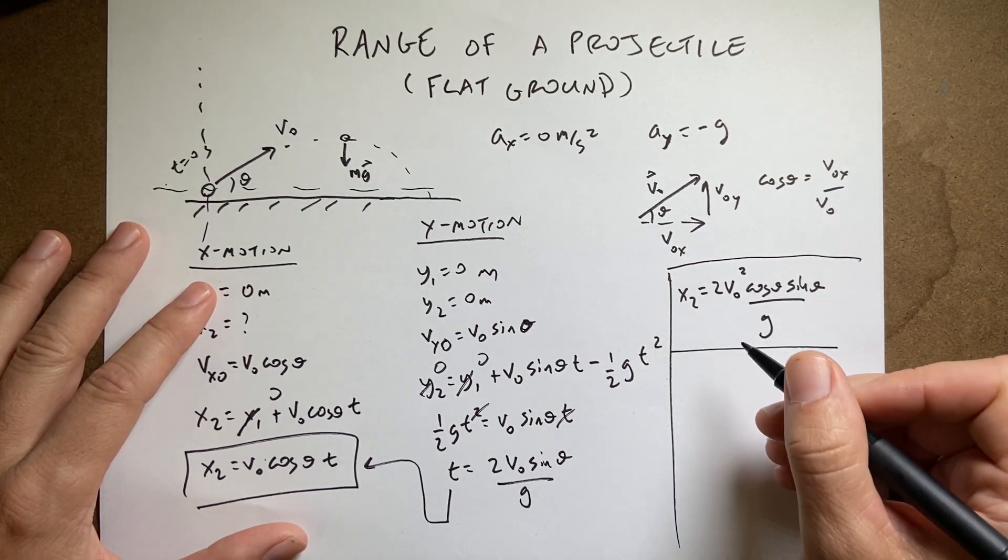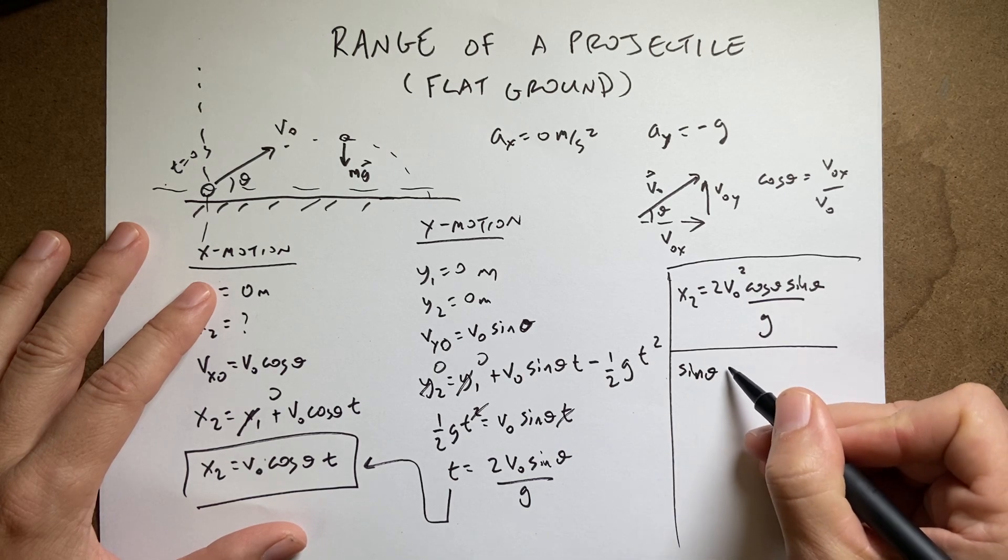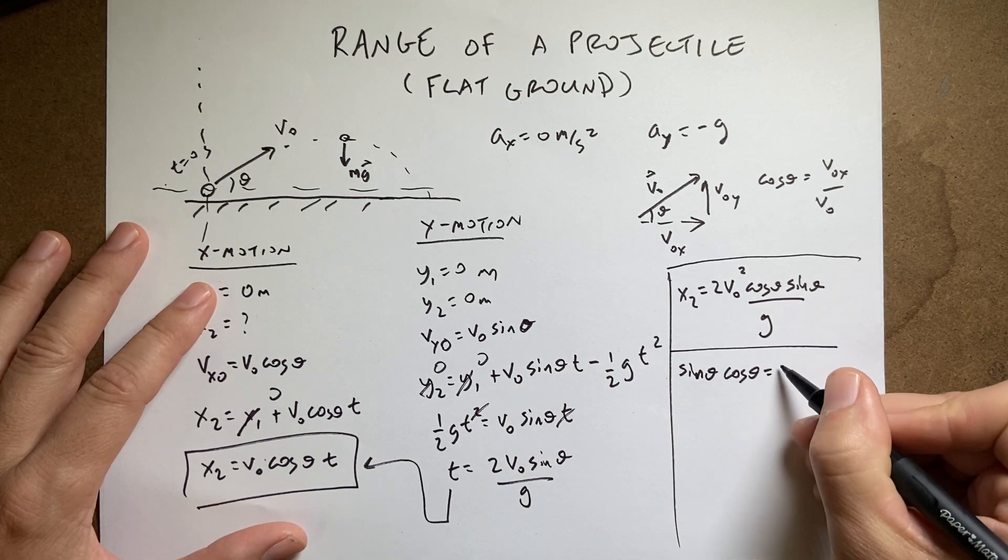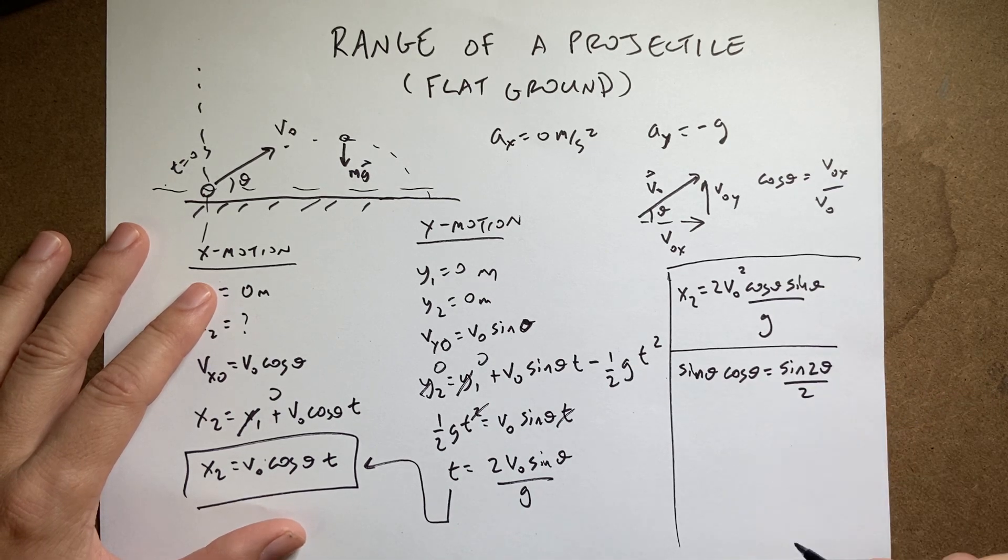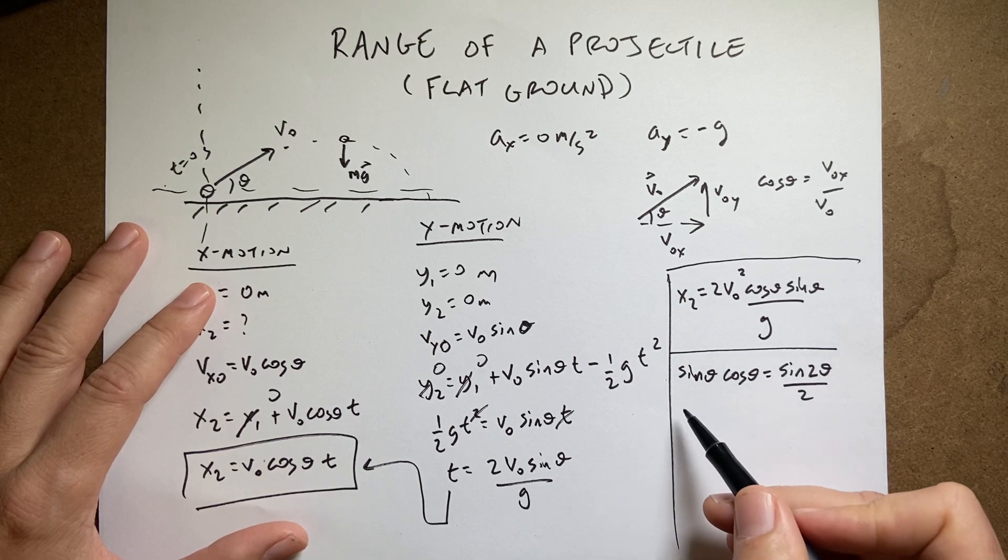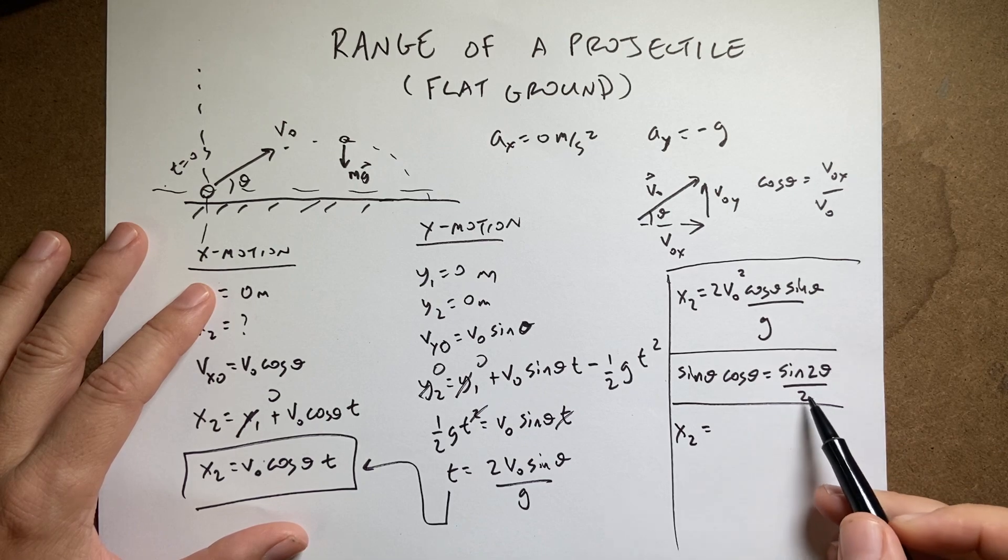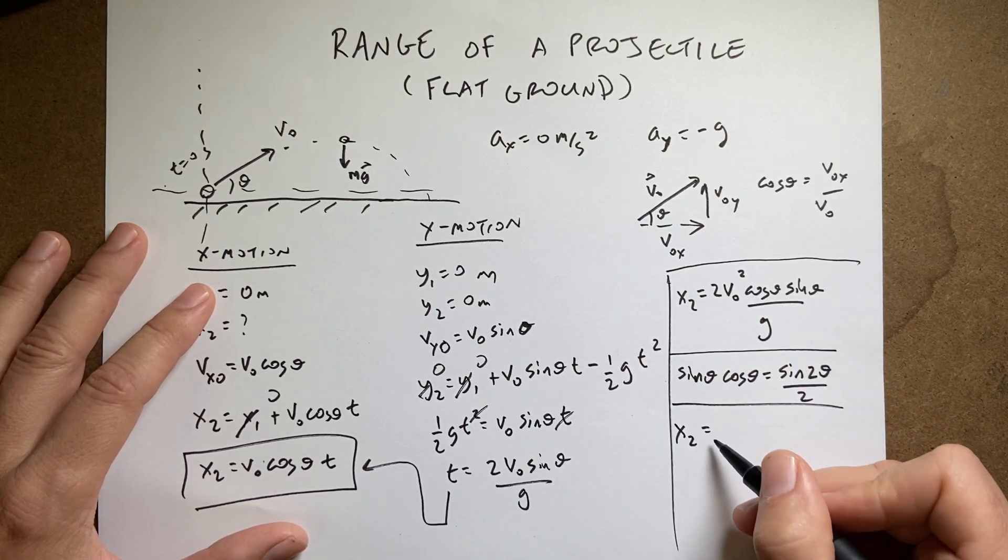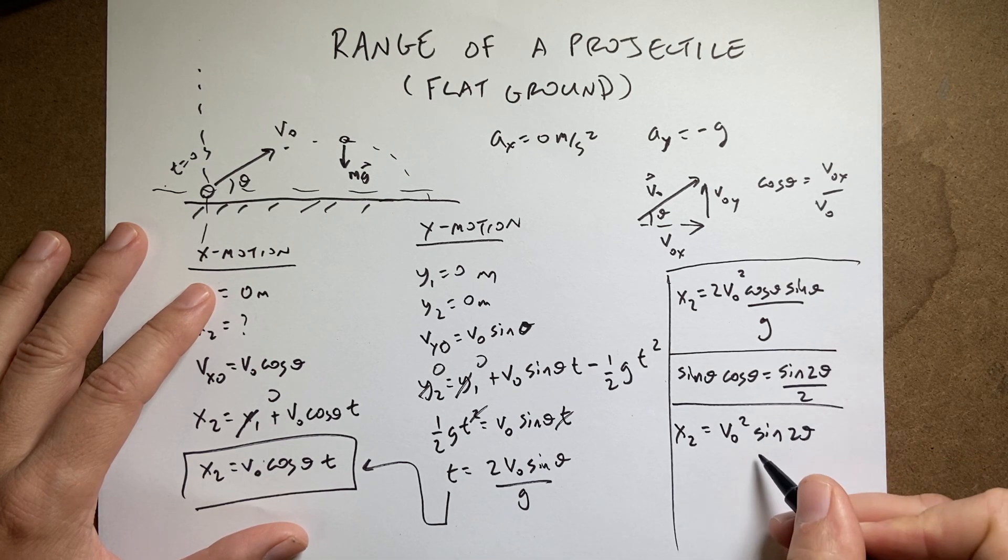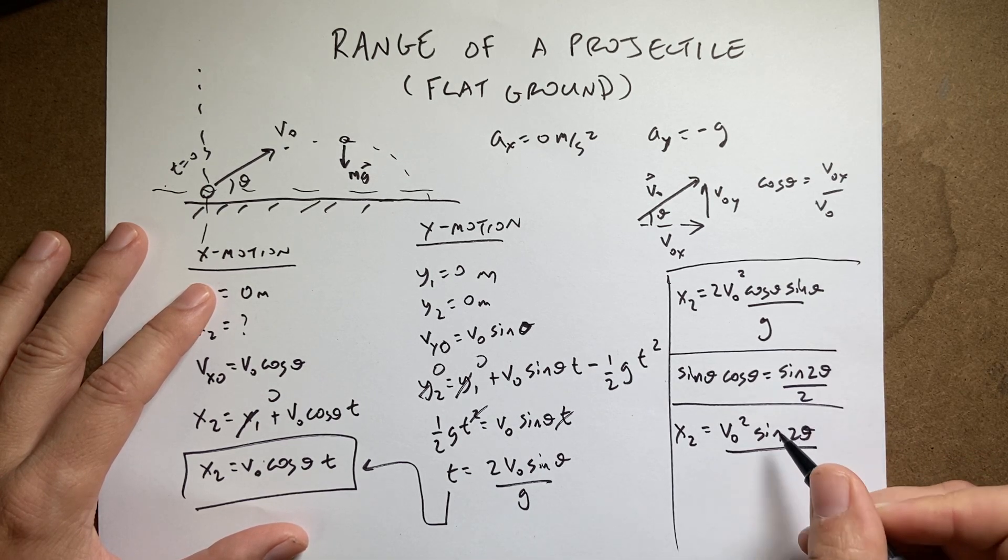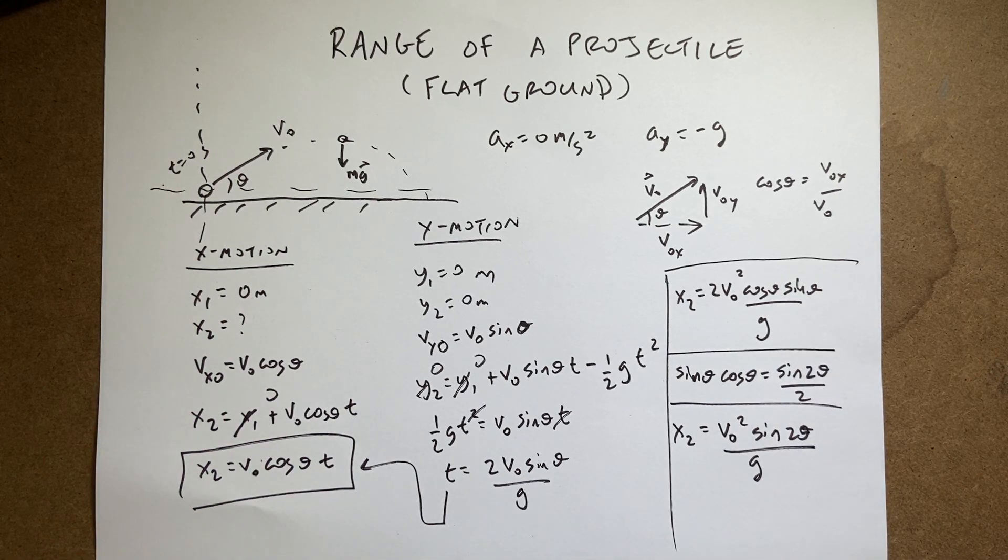Now, there is this double angle formula. Sine of theta times cosine of theta is equal to sine of two theta over two. And maybe I should derive that later, but I'm not going to derive that. So if I use this up here, I get x2 equals, the twos are going to cancel. I'm going to get v0 squared sine of two theta over g. And that's my range. That's the range, the quote range equation.